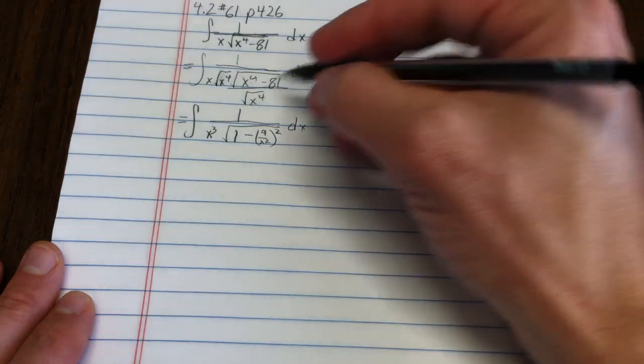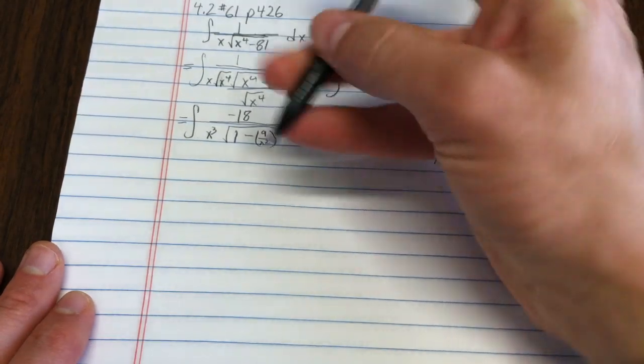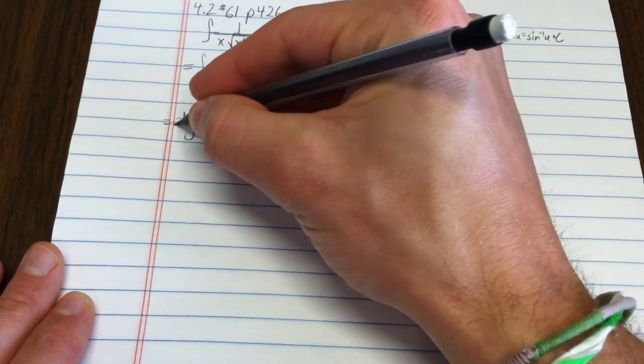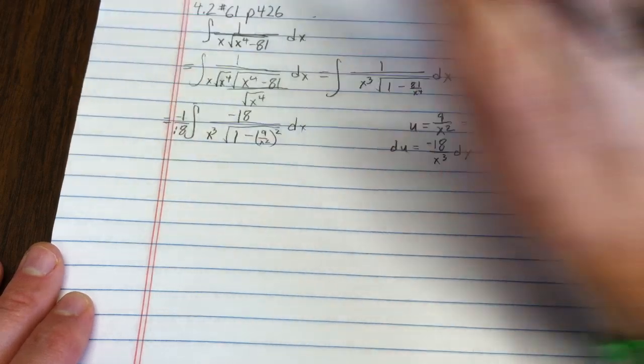So I guess I need a negative 18. That would be better if I put a, or only be true, if I put in a negative 1 18th out in front.